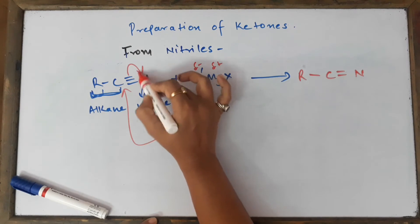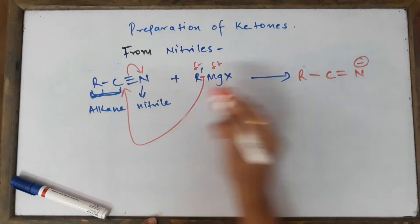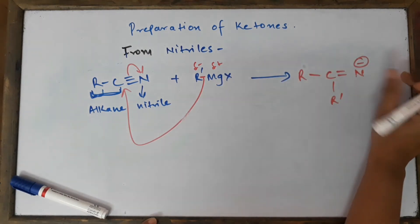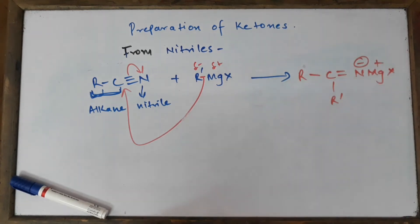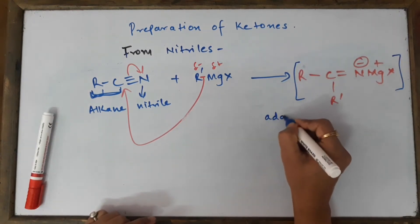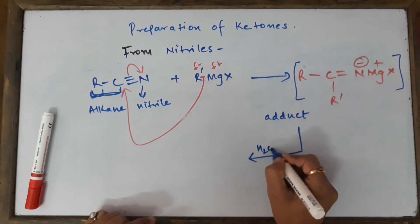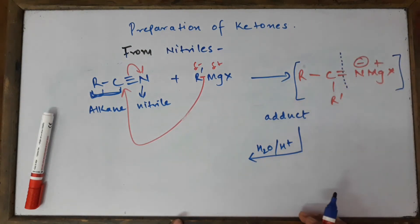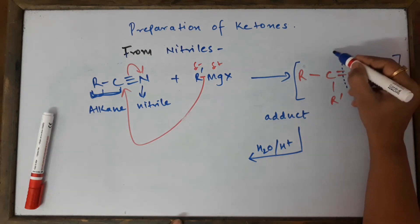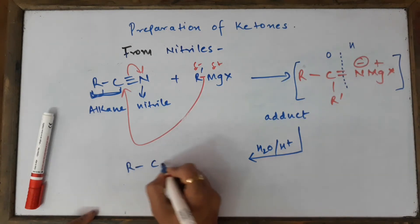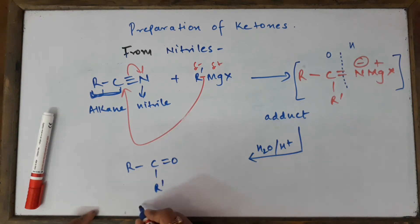We get an intermediate: R-C(=N⁻)·Mg⁺X — the positive and negative parts stay together. This is called the addition product or adduct. We then perform acidic hydrolysis by washing with water. The carbon-nitrogen bond breaks: oxygen goes to the carbon and hydrogen goes to the nitrogen. Our answer is R-C(=O)-R' — we got our expected ketone.